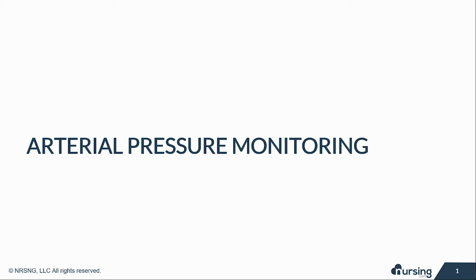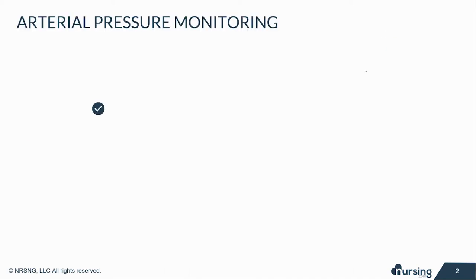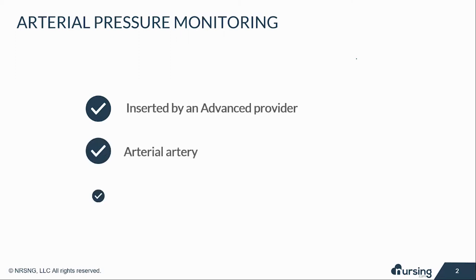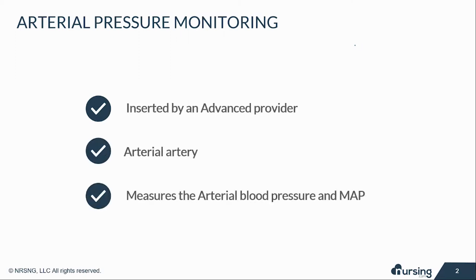In this lesson we're going to talk about arterial pressure monitoring. Basically, arterial pressure monitoring involves a small catheter inserted into an artery. You may have heard the term A-line or art-line — it's the same thing. It's a catheter inserted into an artery to help monitor arterial blood pressure.